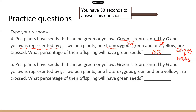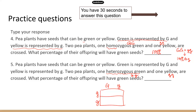The next question is the same setup but with a different parent plant. This time one parent is heterozygous green — big G little g — and one yellow — little g little g. They're crossed, and we ask what percentage of offspring will be green. I'll put it in the Punnett square: big G little g crossed with little g little g gives four combinations — two are big G little g (green) and two are little g little g (yellow). So the percentage of green seed offspring is 50%.